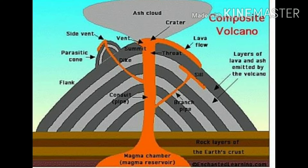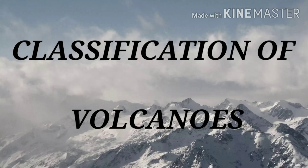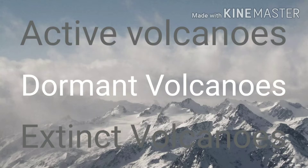Composite or stratocone: a stratovolcano is characterized by alternate sheets of lava and pyroclastic material. It experiences alternate periods of explosive and quiet eruptions. Lava solidifies to form dykes and they are composed of more than one vent. The cone throws out rock fragments and magma may escape through another vent at the same time. For example, Mount Fujiyama of Japan. Classification of Volcanoes: volcanoes may be classified into active, dormant and extinct volcanoes.